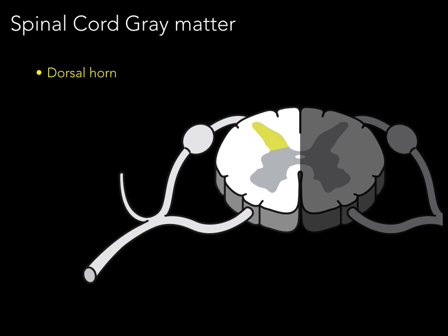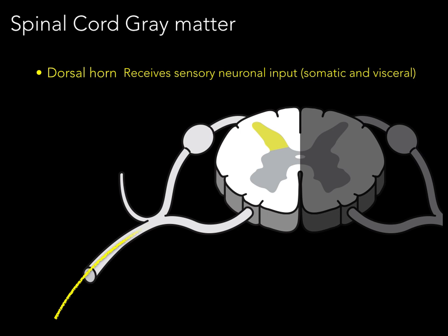The dorsal horn receives sensory neuronal input, both somatic and visceral. A sensory neuron enters via the dorsal root — with its cell body in the dorsal root ganglia — and brings information into the dorsal horn.